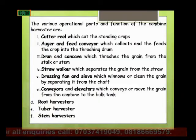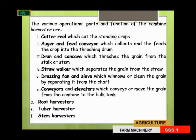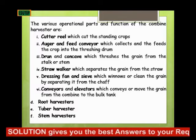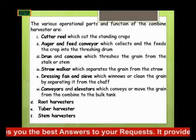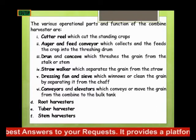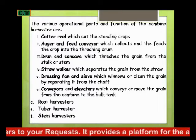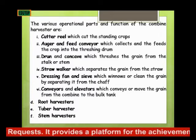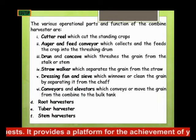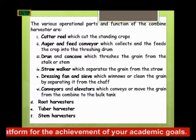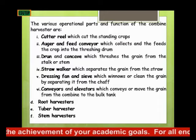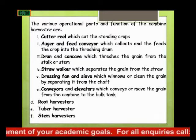The various operational parts and functions of the combined harvester are: first, the cutter rail, which cuts the standing crops. The second component is the auger and the feed conveyor, which connects and feeds the crops into the threshing drum. The third component is the drum and the concave, which threshes the grain from the stock or stem.